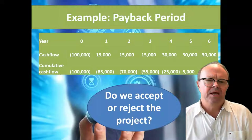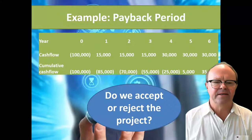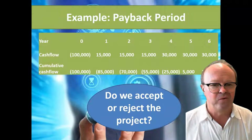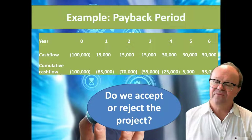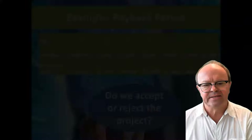Once we've calculated the payback period, do we accept or reject the project? A payback period of 4.83 years — it depends on our predetermined limit. If we said we must get money back in four years, then no. But if five or six years is acceptable, then we would proceed. Whether we accept or reject depends entirely on our predetermined limit.